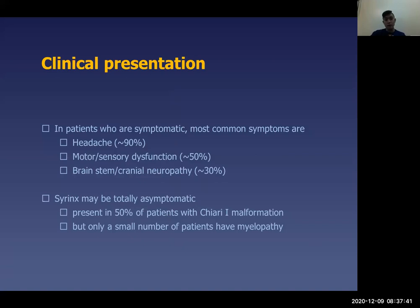When we talk about clinically symptomatic patients, the vast majority who have issues related to this abnormality will have headache — specifically occipital or posterior headaches. About half of symptomatic patients will have some degree of motor and sensory dysfunction. And about a third will have some degree of brainstem or cranial neuropathy. These are the patients we consider symptomatic, not the overall patient population.